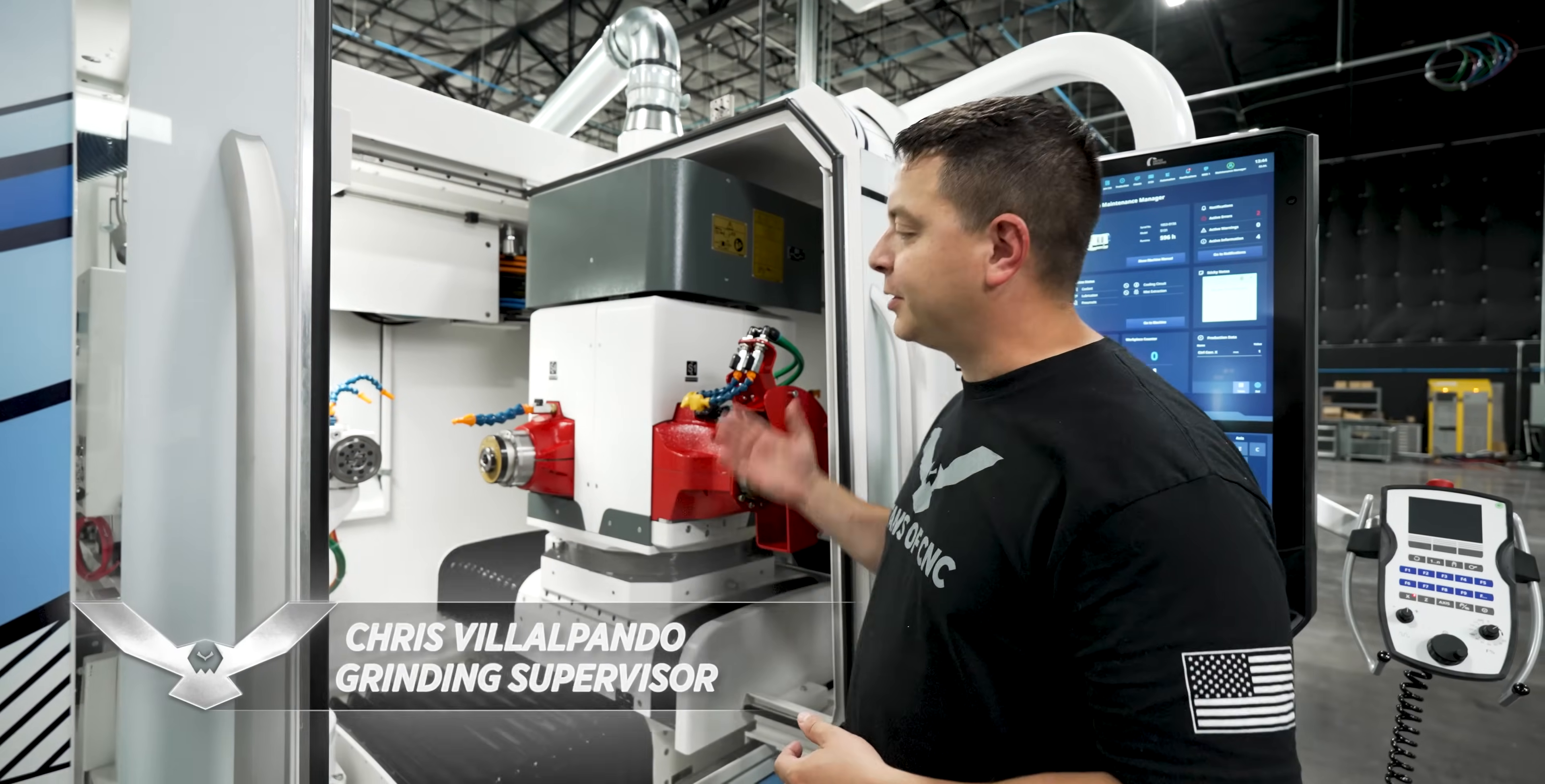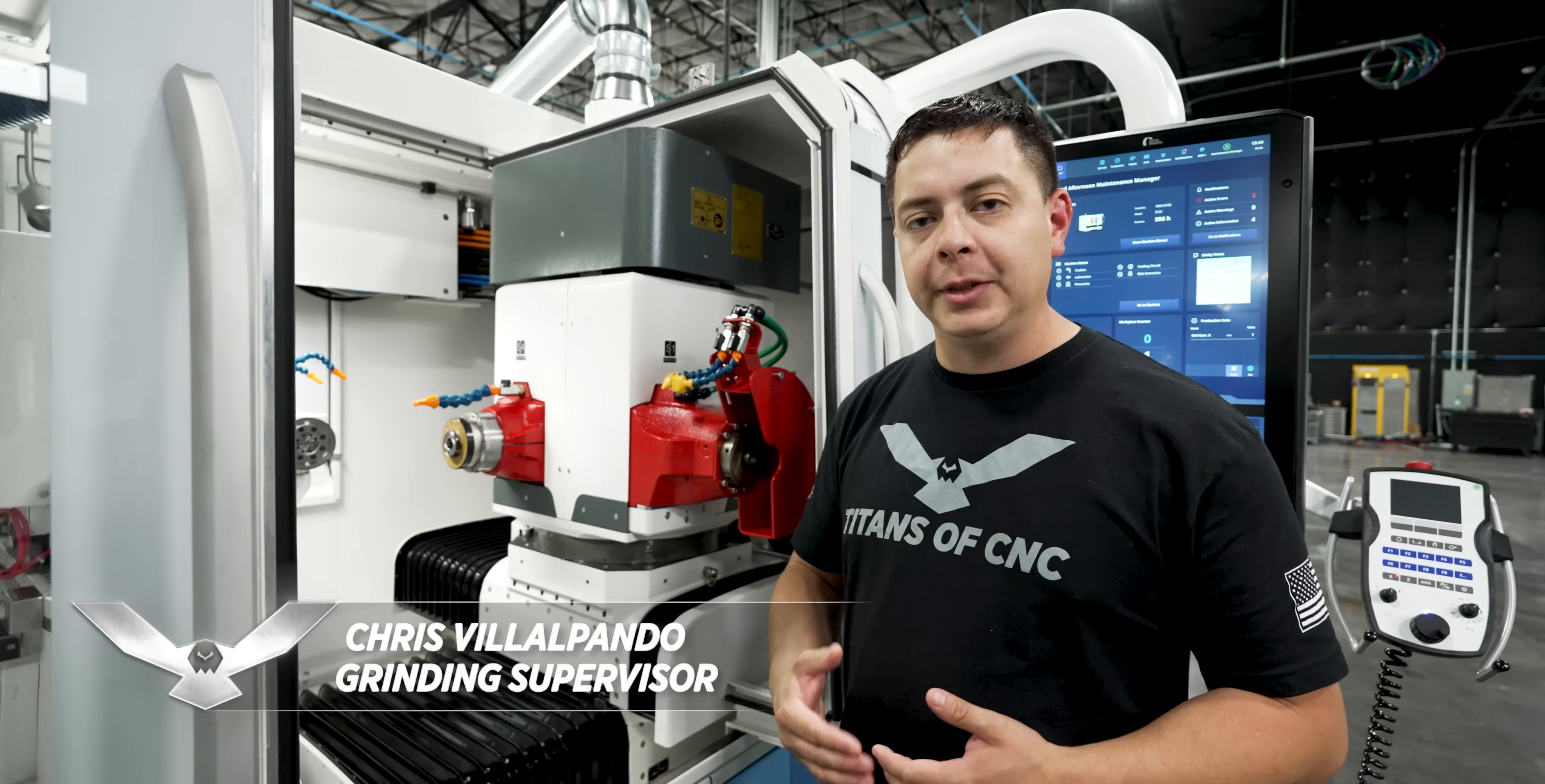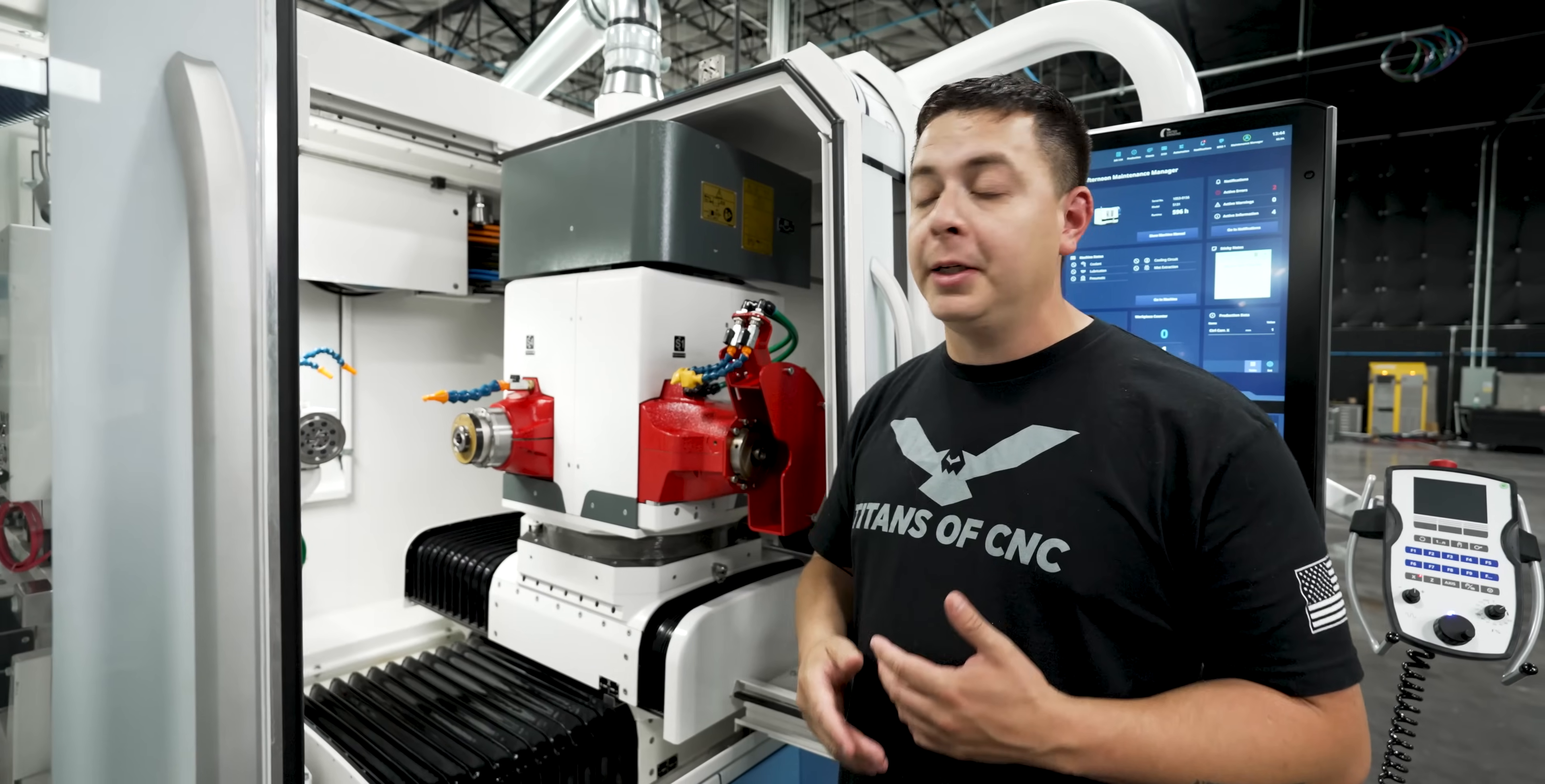So what's cool about it is it's a radius grinder. Now that's a lot different than regular ID grinding machines, because a regular ID grinding machine allows you to go in and grind a bore straight, or you can put a taper on it, or you can even thread the ID.